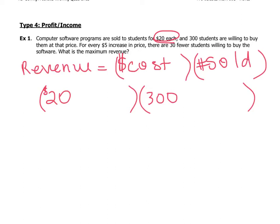Now here's where the change happens. For every price increase of five dollars — that's 5x, where x is the number of times you increase the price — thirty fewer students will be willing to buy.